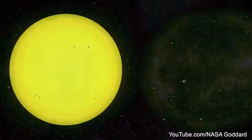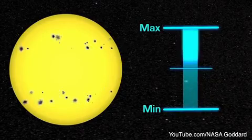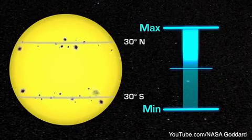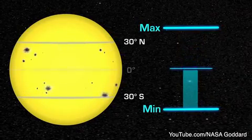During this cycle, the location of the sunspots also changes. They are at middle latitudes during solar maximum and move closer to the equator as the Sun approaches solar minimum.